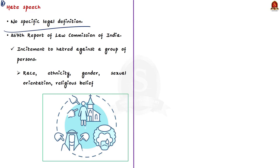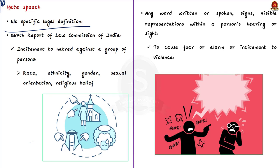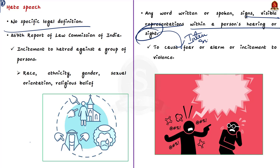In the 267th report of the Law Commission of India, hate speech is defined as an incitement to hatred primarily against a group of persons. This group of persons is defined in terms of race, ethnicity, gender, sexual orientation, and religious belief. In simple words, hate speech is any word — written or spoken — sign, or visible representation within the hearing or sight of a person with the intention to cause fear, alarm, or incitement to violence.